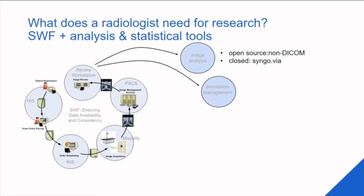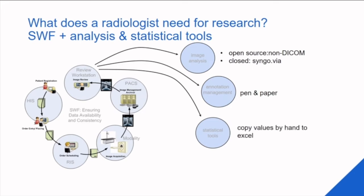You need some kind of annotation management system, and usually this is done by pen and paper — we just look at the patient, look at the image, and write down something about the patient. Statistical tools: copy values from the PACS system by hand to Excel, and then even go to some statistical person to have your data analyzed.